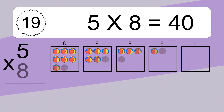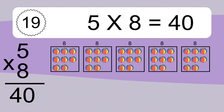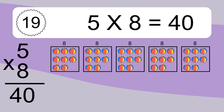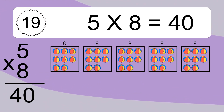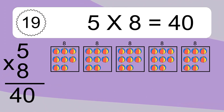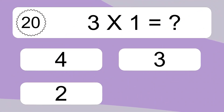5 times 8 equals what? We have 5 boxes, and each box has 8 colorful balls inside. If you count all the balls in all the boxes together, you will have 5 times 8 balls. This equals 40 balls.